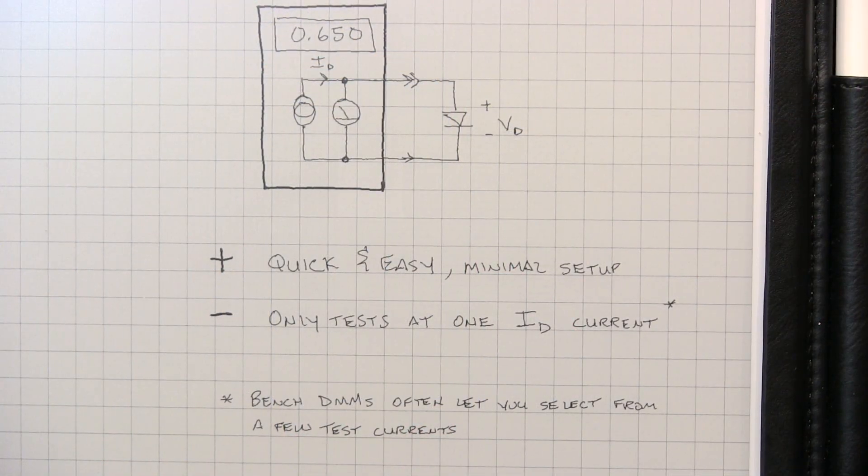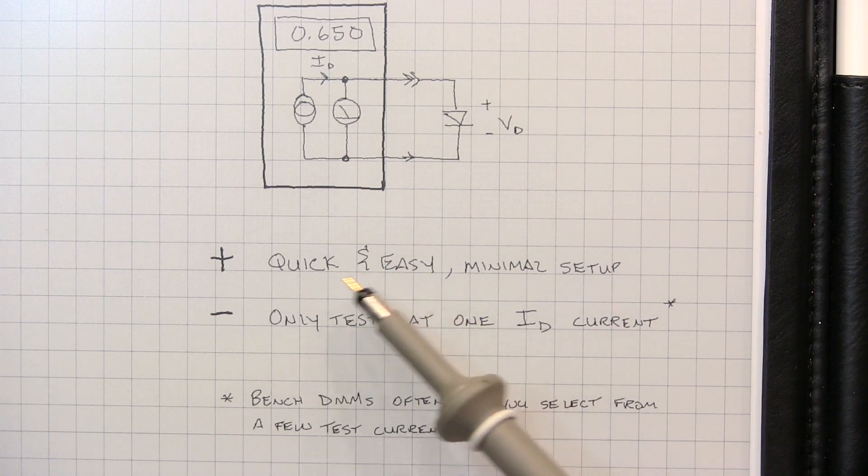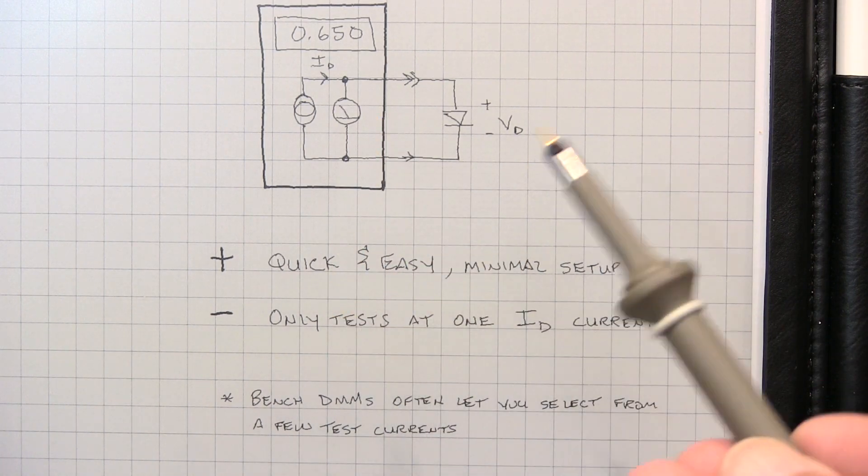So we can see one of the advantages of this method is it's really quick, really easy. You simply put the meter in that diode test function, connect it up.